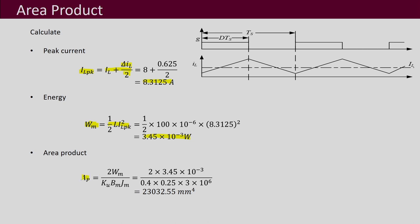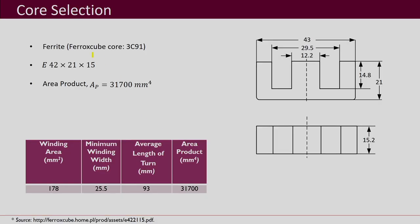Now we have everything for the area product — we know the energy, KU, BM, and JM — and this is the area product we obtain. After obtaining the area product, you can look up the various cores available. We chose the E42 core, and the dimensions of that core are shown here.